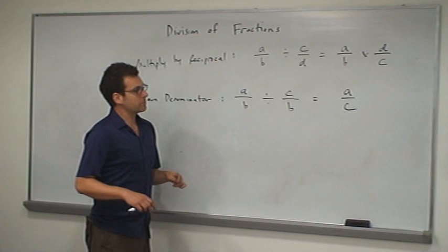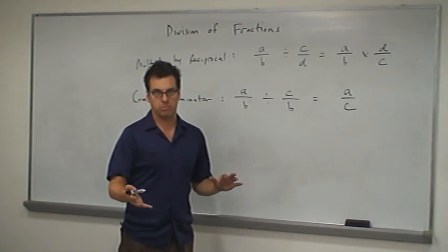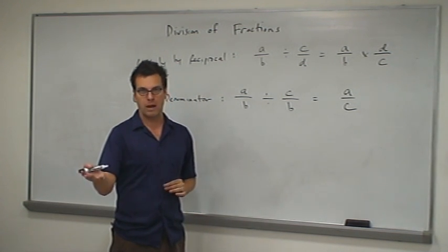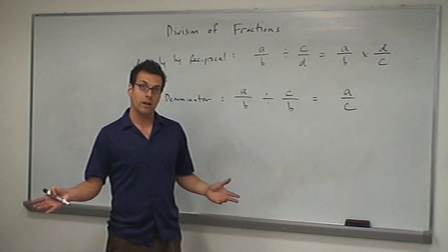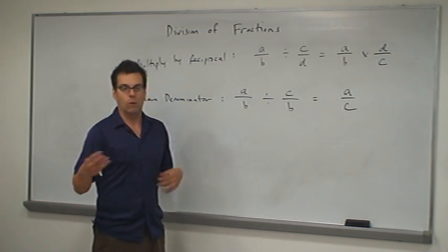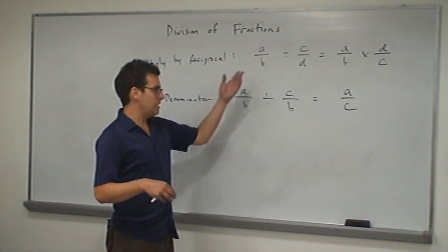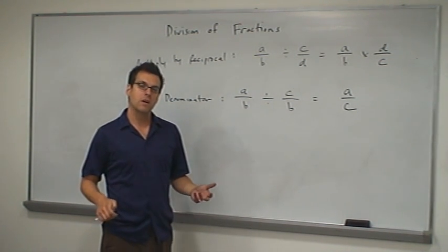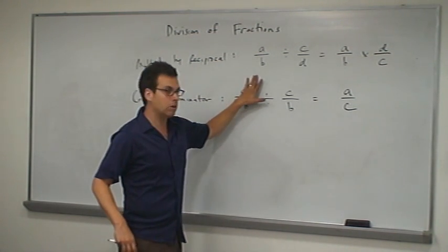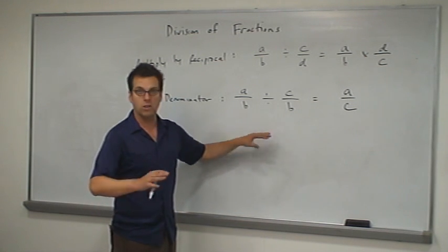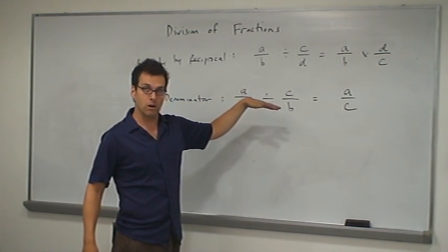Now, if you apply both of these procedures to an individual problem and get different answers, then these would be useless procedures — or at least one of them would be — because how would we pick which one is correct? It turns out, of course, that these are mathematically equivalent to one another. So if you're only going to teach multiply by the reciprocal and not worry about the common denominator method, you don't need to bother showing that the two techniques are equivalent.